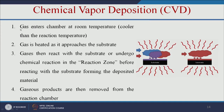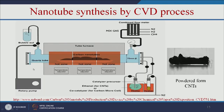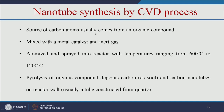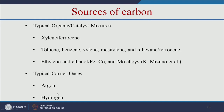In CVD, gas enters the chamber at room temperature — cooler than the reaction temperature — and is heated as it approaches the substrate. The gas then reacts with the substrate or undergoes chemical reactions in the reaction zone, forming the deposited material, and gaseous products are removed. This is a bench-top CVD apparatus setup. The source of carbon atoms usually comes from an organic compound mixed with a metal catalyst and inert gas, atomized and spread into a reactor at temperatures ranging from 600 to 1200 degrees Celsius. Pyrolysis of the organic compound deposits carbon nanotubes on the reactor wall. Typical carbon sources include xylene or ferrocene, and typical carrier gases include argon and hydrogen.